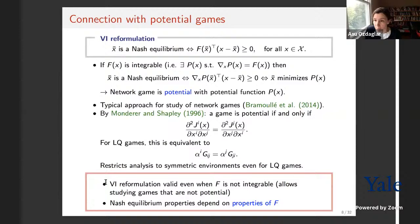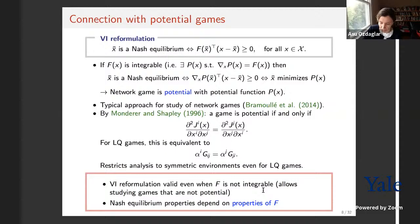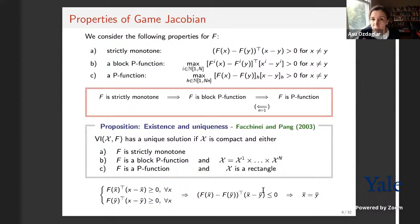Moreover, this viewpoint allows thinking about Nash equilibrium properties in terms of properties of the underlying operator F. I will study some properties of F, relate them to properties studied in the VI literature, and bring those results into the network game setting to establish equilibrium properties in a unified manner — extending results beyond the conditions studied in this literature. Let me now consider the specific properties.